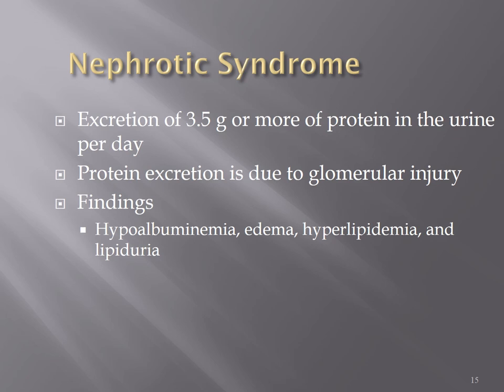Nephrotic syndrome is a manifestation of glomerulonephritis. Antibody-antigen complexes — normally beneficial immune responses — find lodging in the glomerular membrane and trigger the complement system. This is why understanding immunity and complement systems from earlier in the course is important — here you see it all in action.